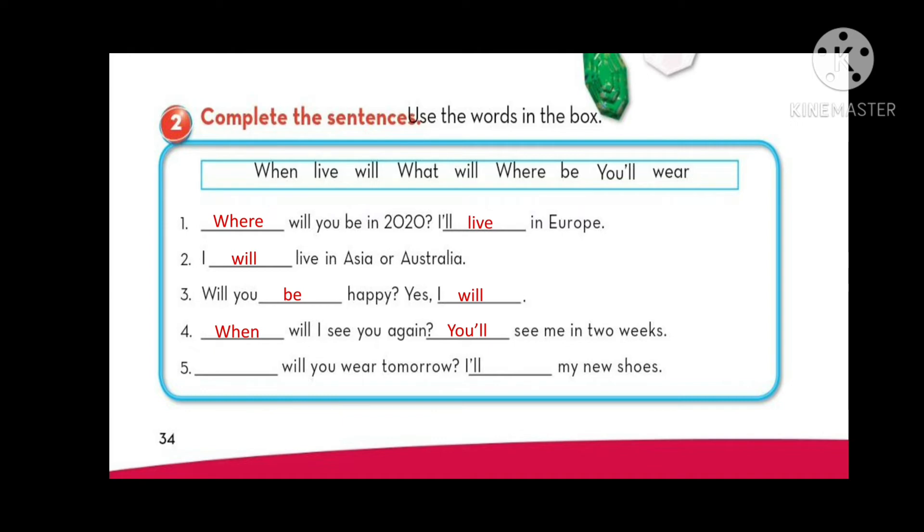Number five. Will you wear tomorrow? We are asking about a thing. Look at the answer. My new shoes. So we are asking about a thing. So the question should start with what. That's right. What will you wear tomorrow? I will wear my new shoes. Excellent. I want all of you to write down the answers.